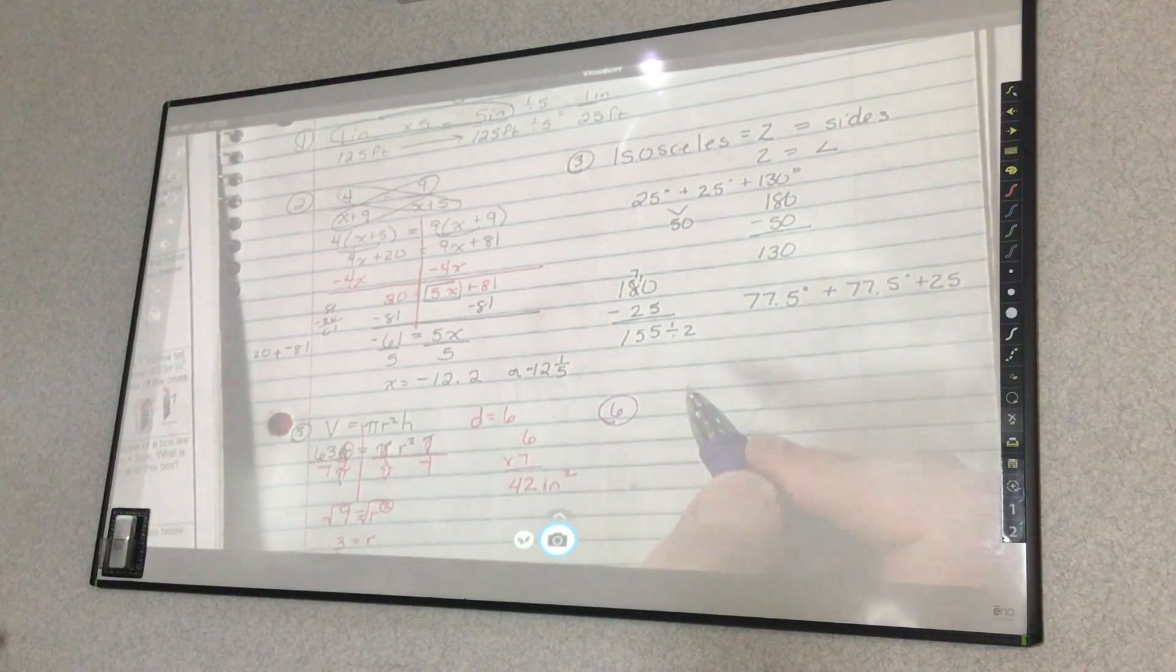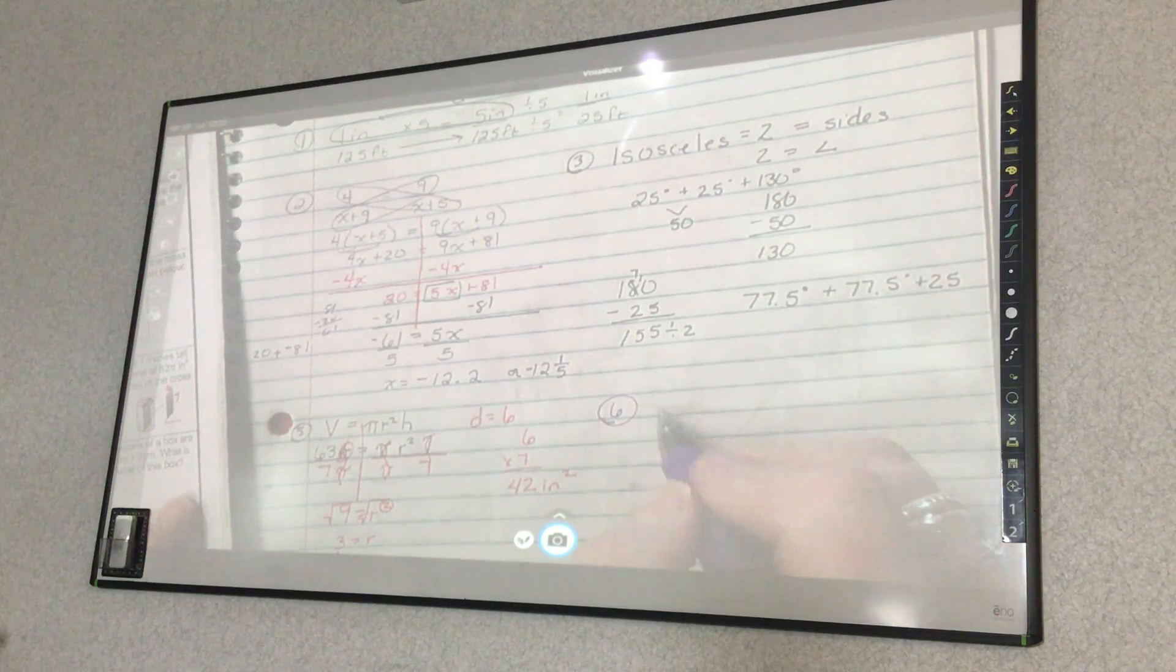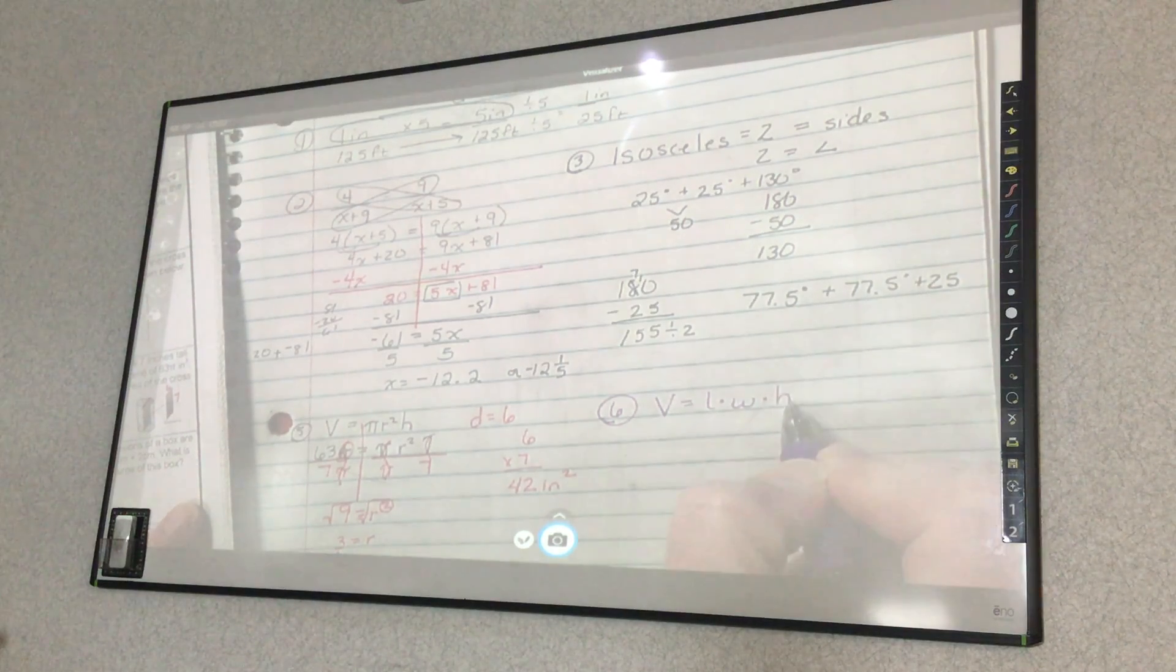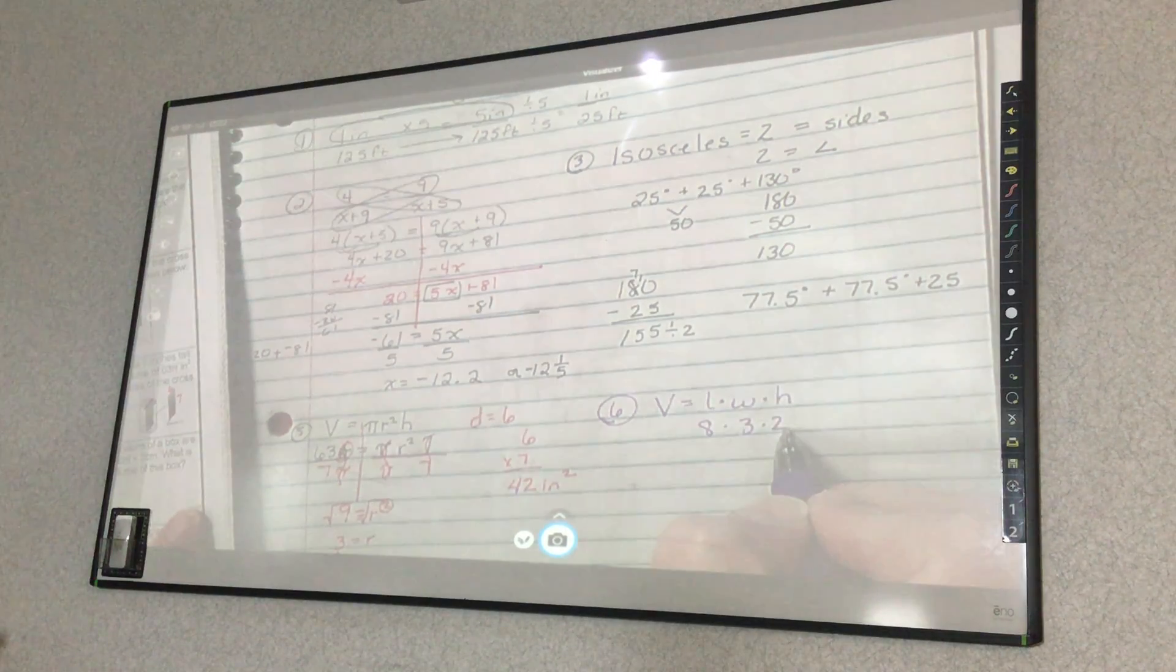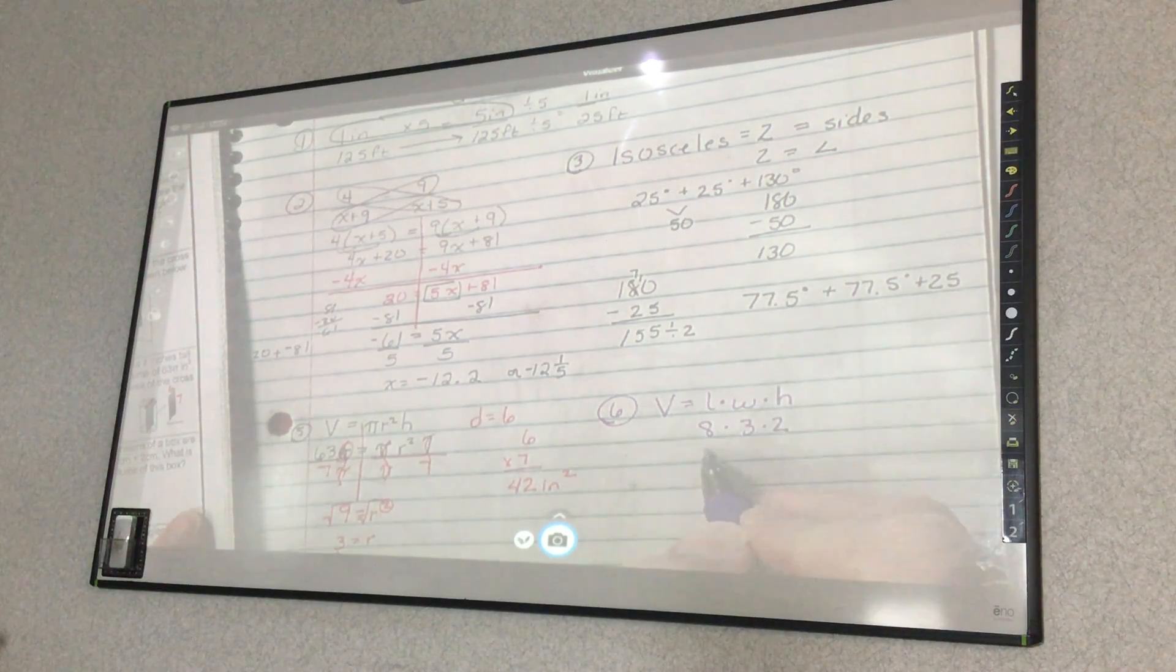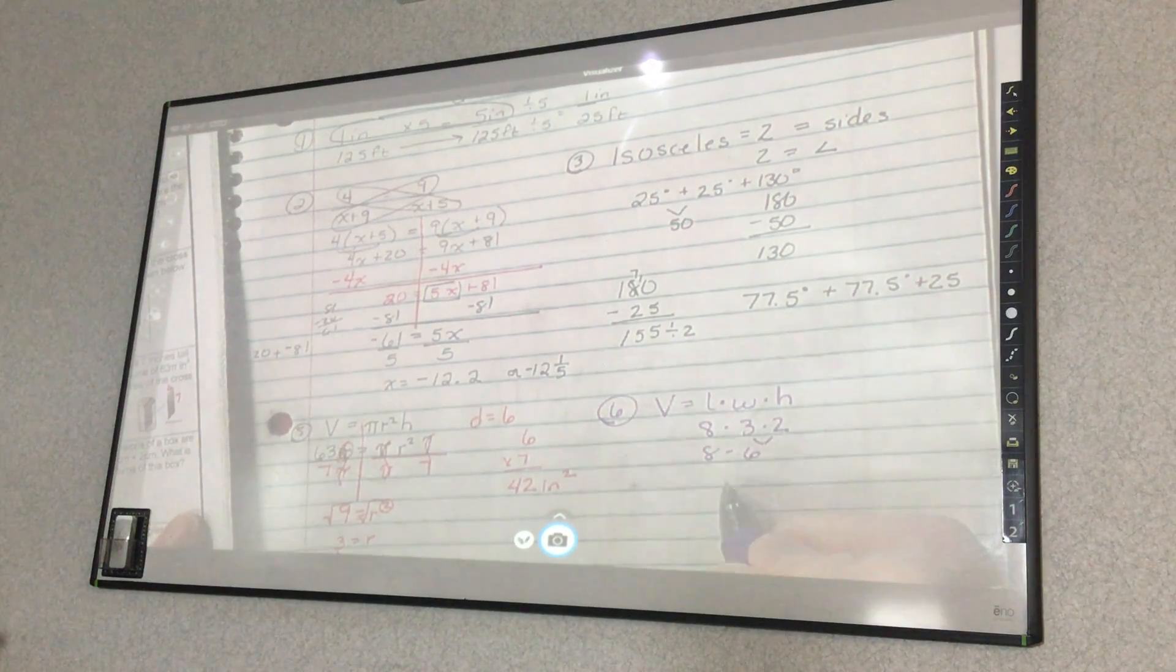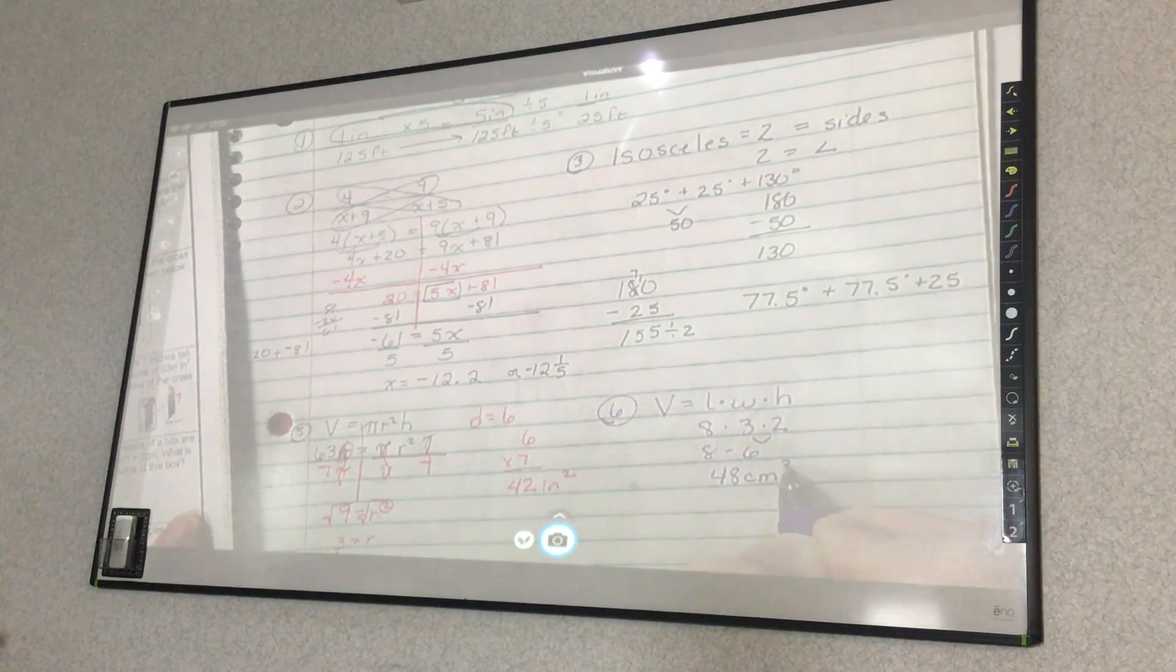The dimensions of a box are eight by three by two. What is the volume? Volume equals length times width times height. So I just plug in my number. Eight times three times two. Eight times... I'm going to do three times two, which is six. So eight times six is 48 centimeters cubed.